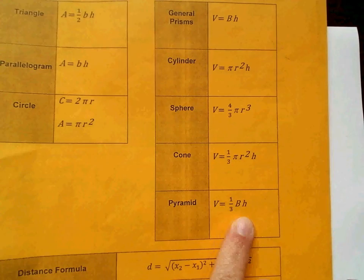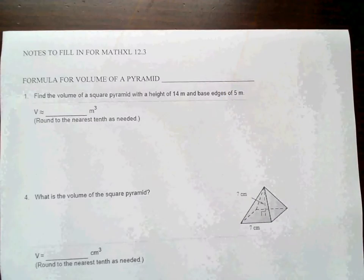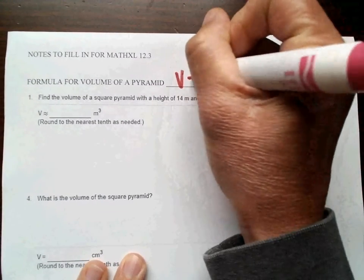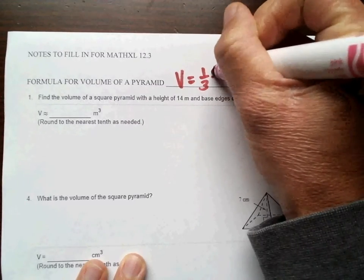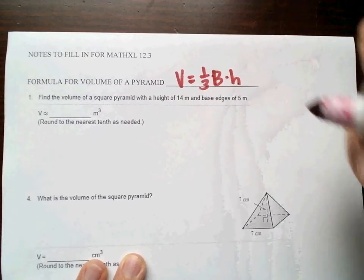On our formula sheet, the volume of a pyramid is equal to one-third times the area of the base times the height. Remember, big B means area of the base. So volume equals one-third times big B times h, where big B is the area of the base.